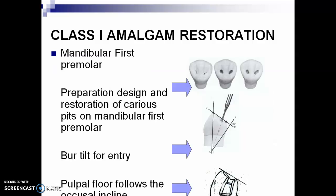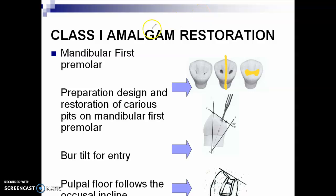Let me go back to your mandibular first premolar. If in case the caries would cross the transverse ridge — this is your transverse ridge — then you can connect your preparation, just like a dumbbell shape: dovetail, dovetail, and then isthmus, and then dovetail. If the caries would cross the transverse ridge.